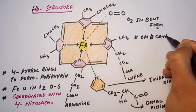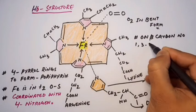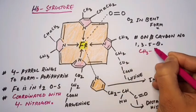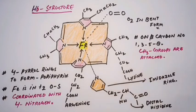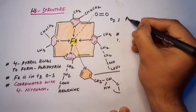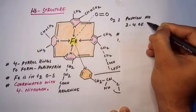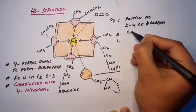On the beta-carbon number 1, 3, 5, and 8, methyl groups are attached. On position number two and four of the beta-carbon, the vinyl group is present.